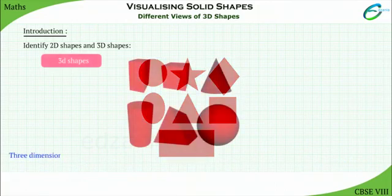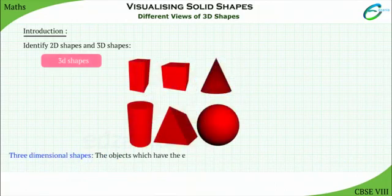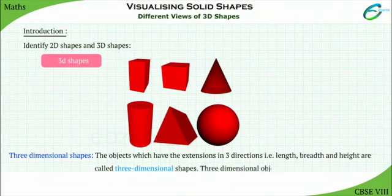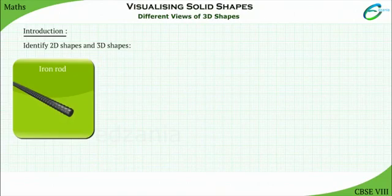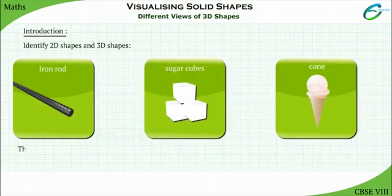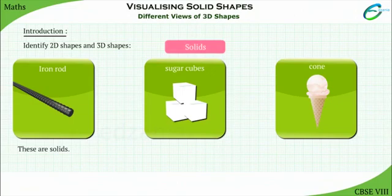3D shapes are objects which have extensions in three directions: length, breadth and height. They are called three-dimensional shapes. Three-dimensional objects have thickness. 3D shapes are all solid because they have volume, they occupy space. The solids are also called three-dimensional objects.